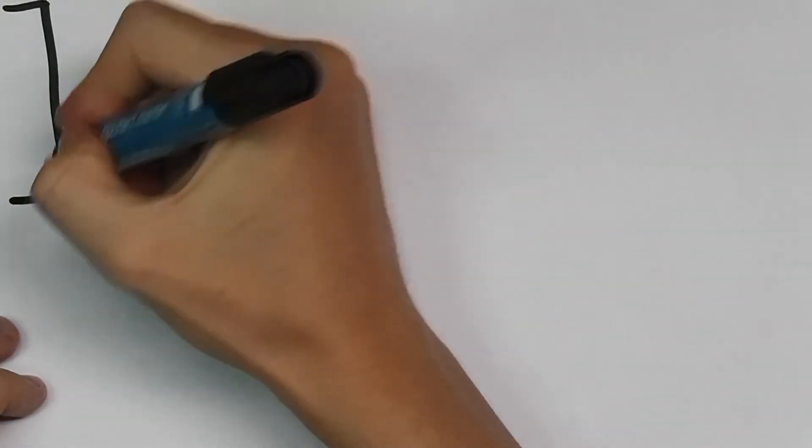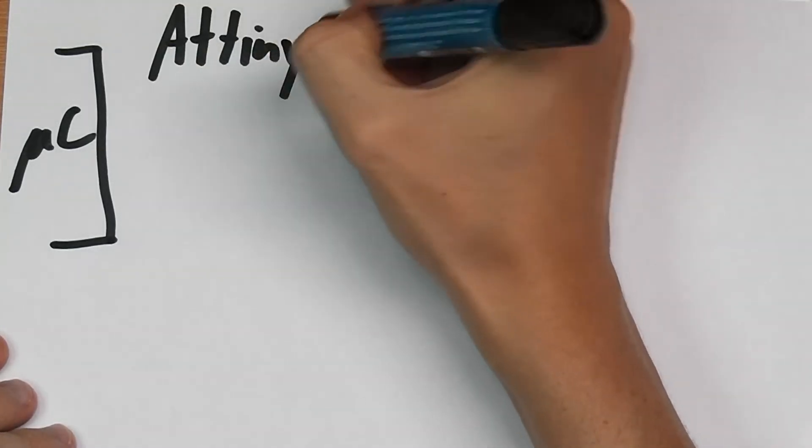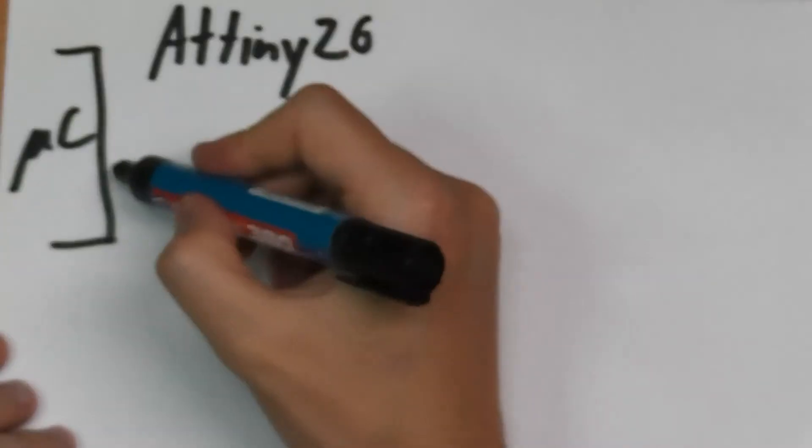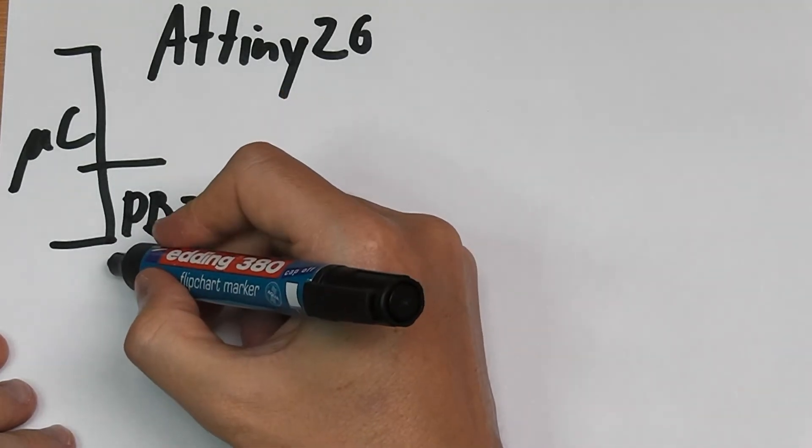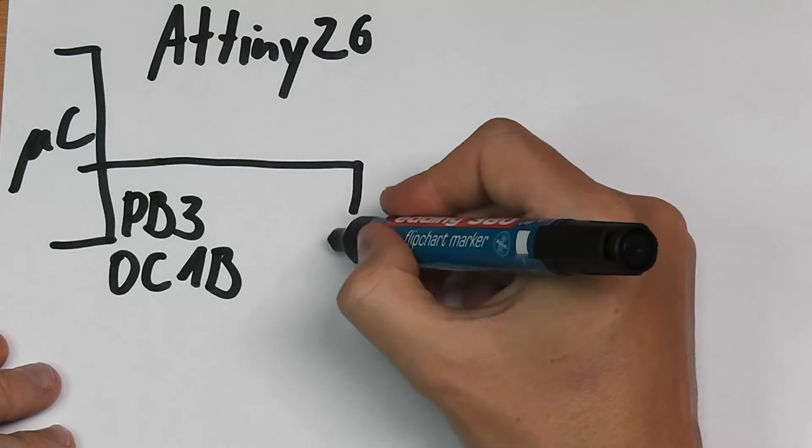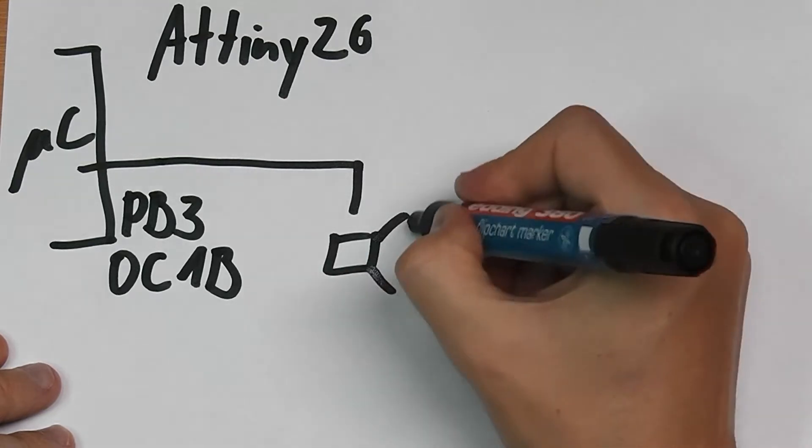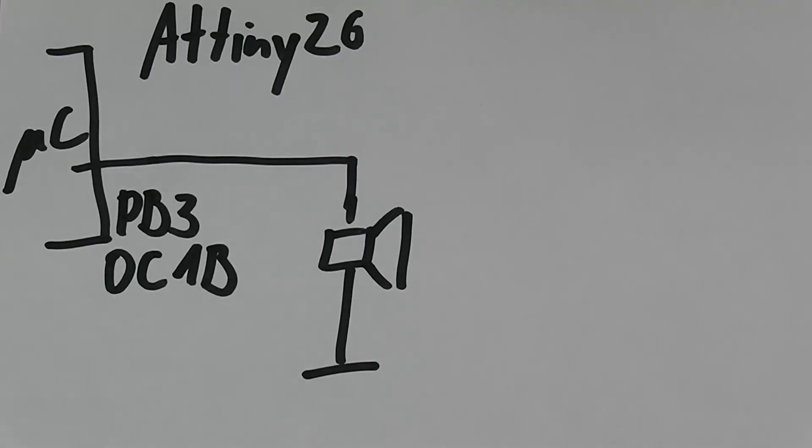If we have the microcontroller on this side, basically this is an ATtiny26. One port pin, this is the PB3 or the OC1B pin, basically just directly drives a speaker which is connected to ground on the other side.